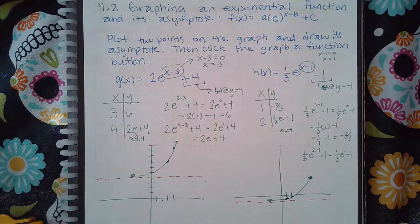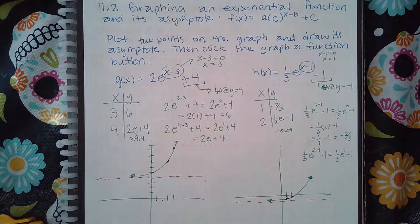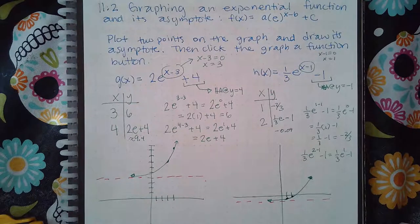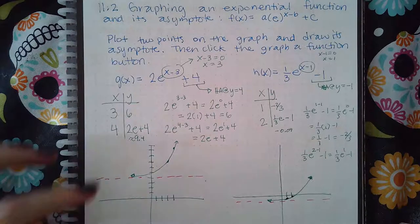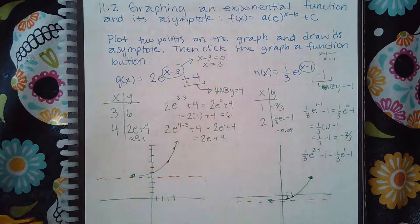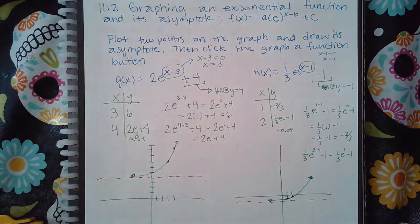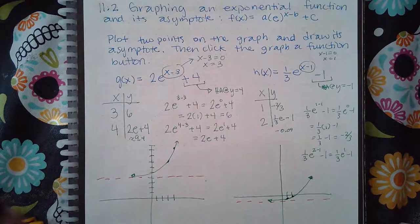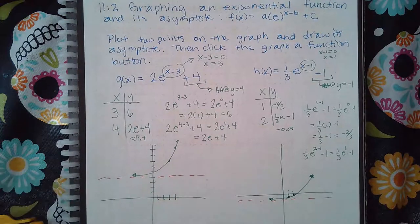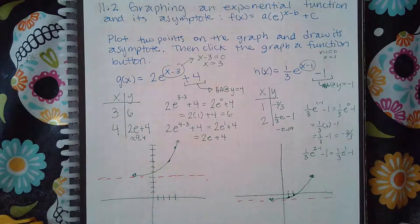Okay, and so again it'll graph it for you. All you need to know is use that button to plot the exact points and then click on the asymptote, place the asymptote where it needs to be, and then click on the graph of function icon.